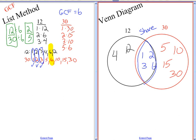So if I want to look for my greatest common factor, you look in the middle for the shared factors, and the largest one is 6. So my GCF, or greatest common factor, would be 6.